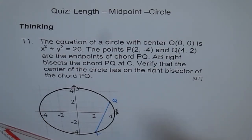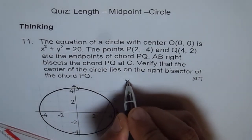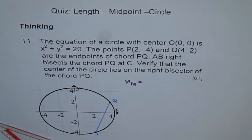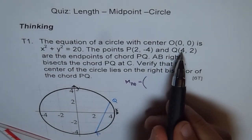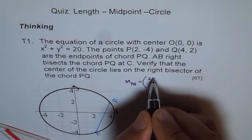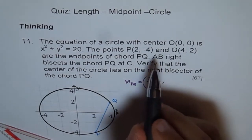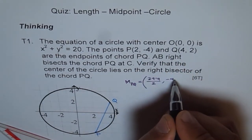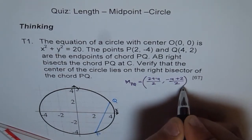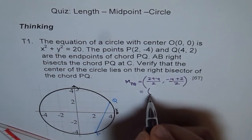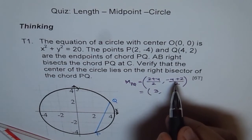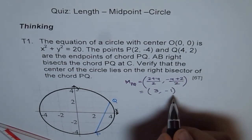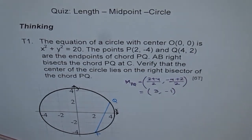Let's find the midpoint of PQ — let me call that M_PQ. M_PQ will be (x₁ + x₂)/2 and (y₁ + y₂)/2. So x₁ + x₂ is 2 + 4 divided by 2, and y₁ + y₂ is -4 + 2 divided by 2. That gives us 6/2 = 3 and -2/2 = -1. So we get our midpoint, which is (3, -1).